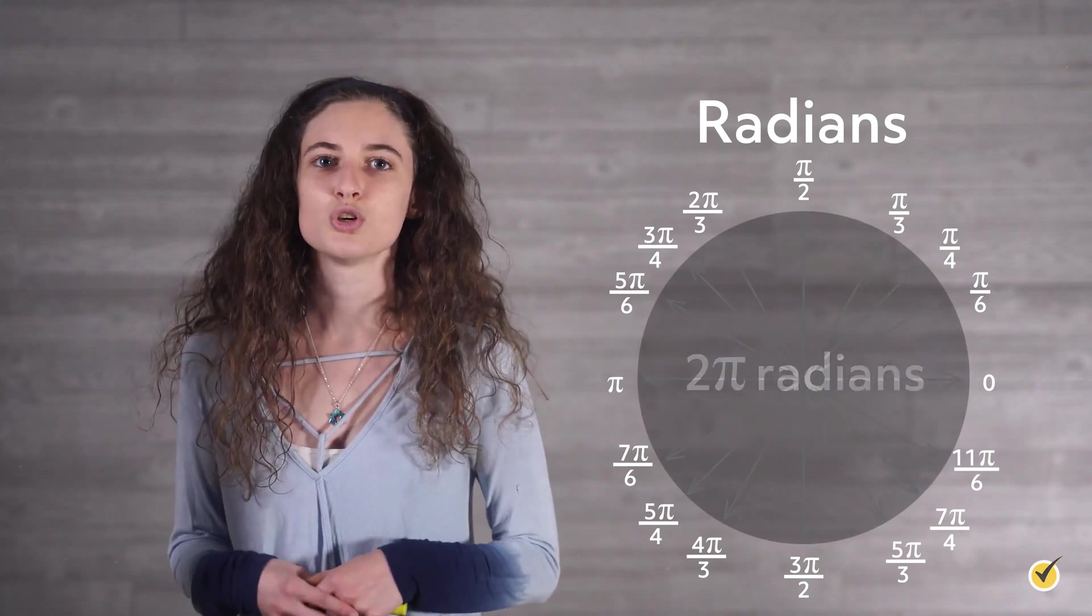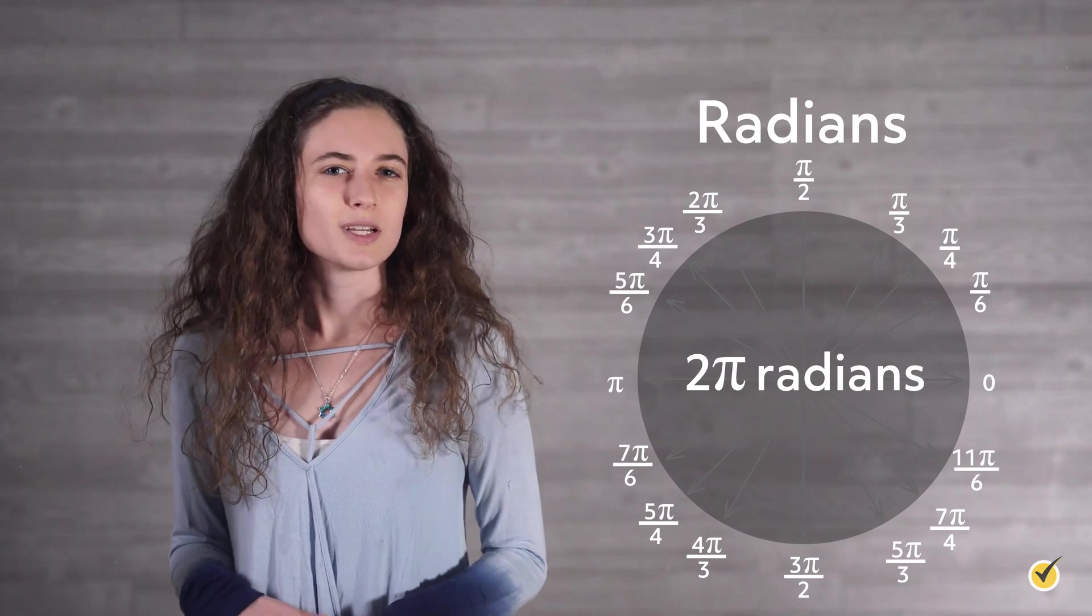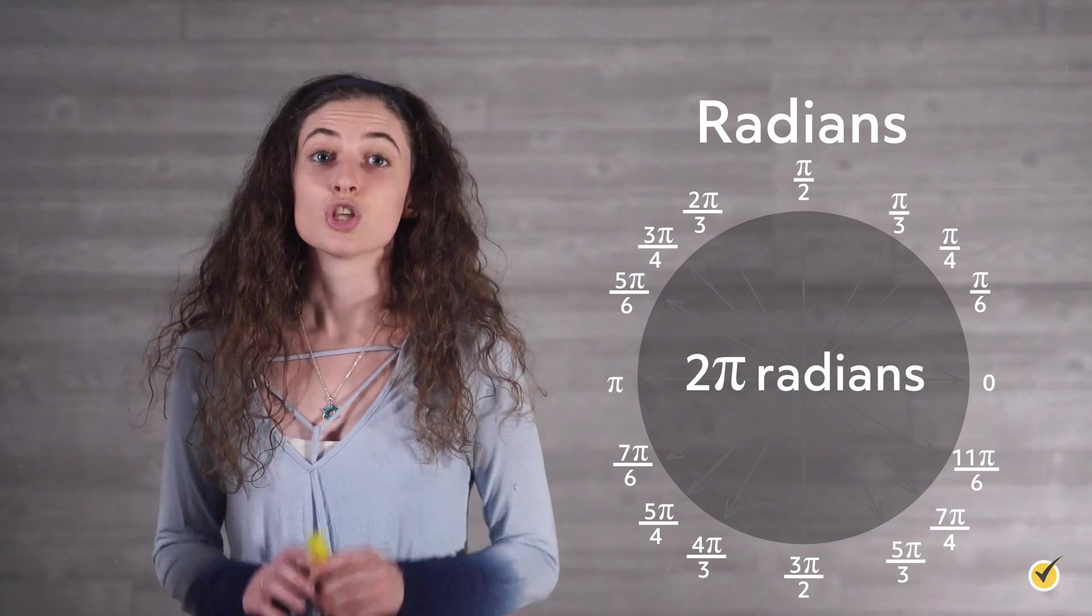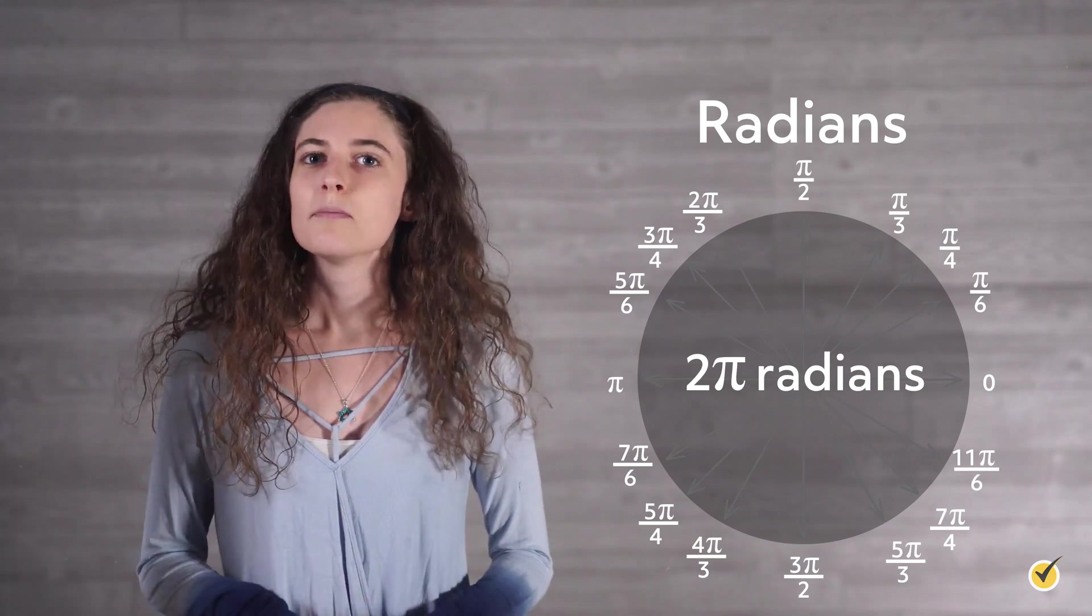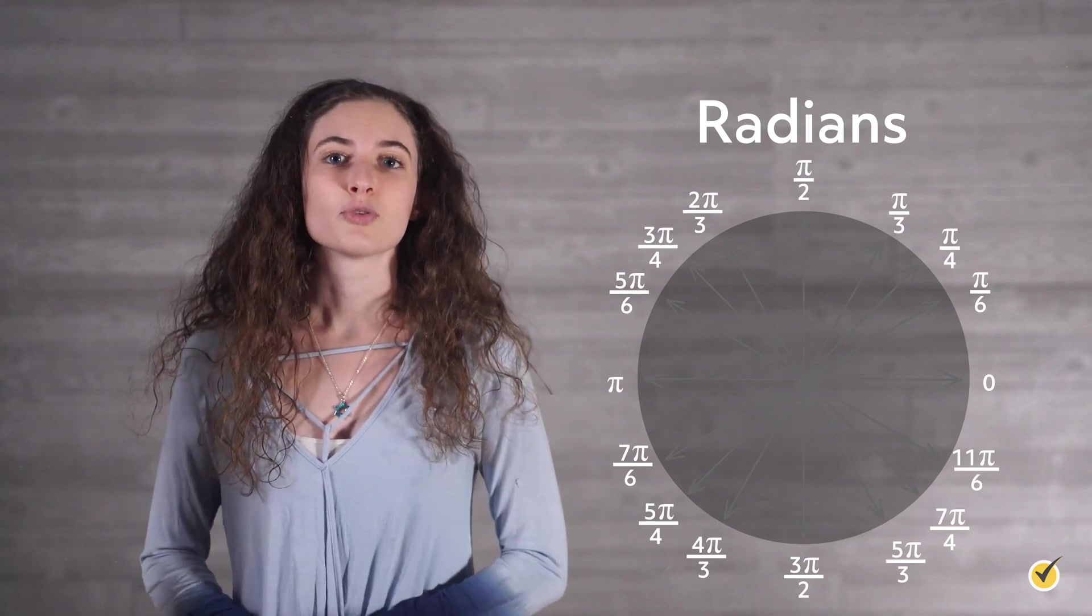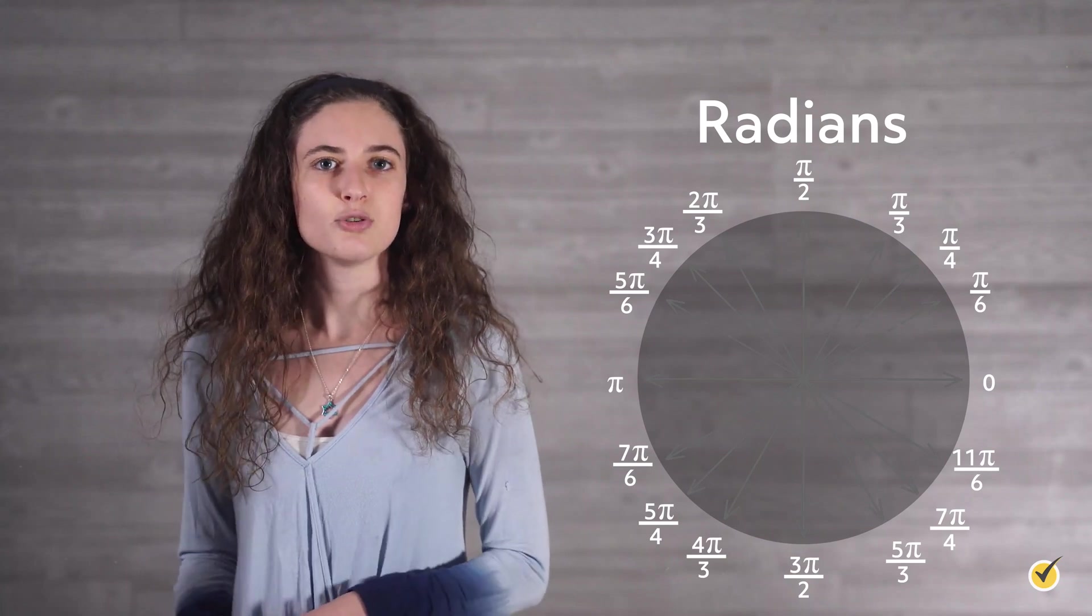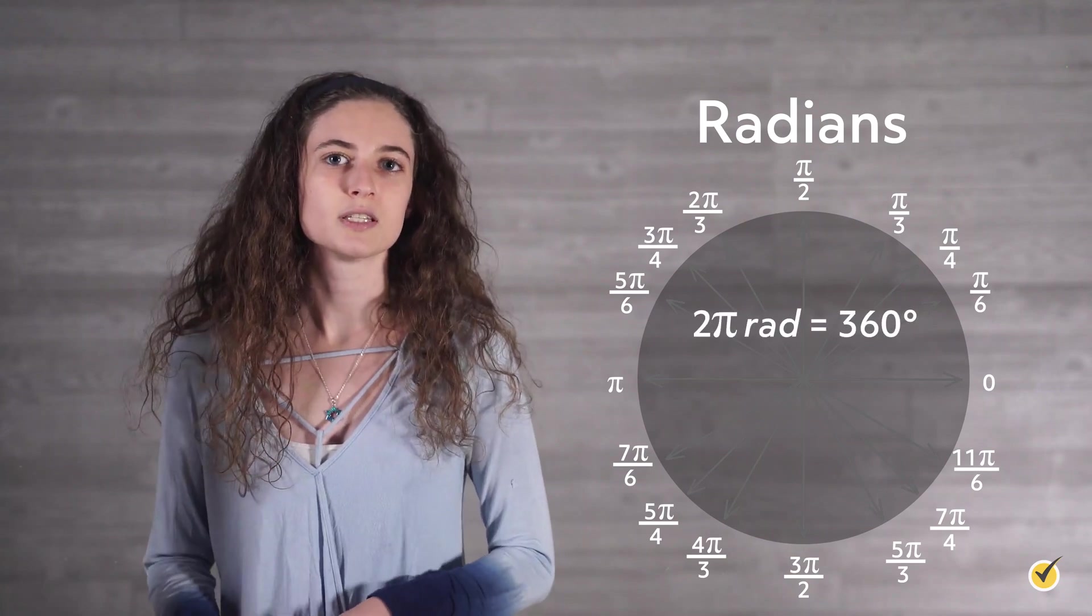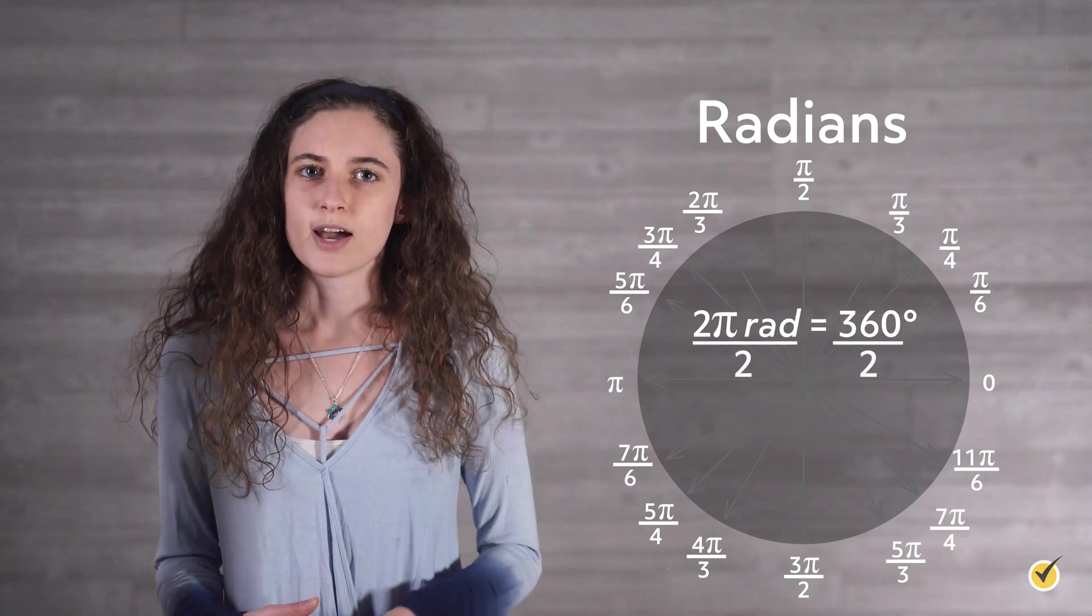It also has 2 pi radians. Think of radians and degrees like centimeters and inches. There are two different forms of measurement, but they can be used to measure the same thing and can be converted between. The conversion used for radians and degrees is 2 pi radians equals 360 degrees, or if you simplify that, pi radians equals 180 degrees.